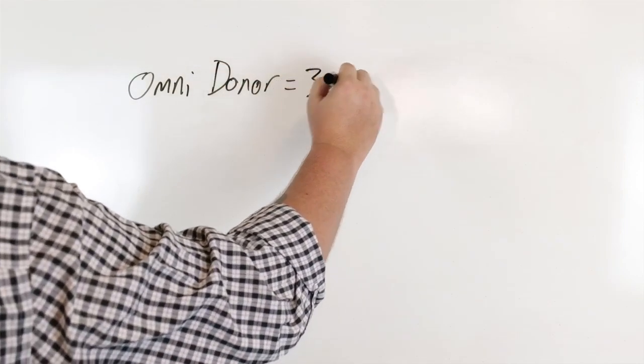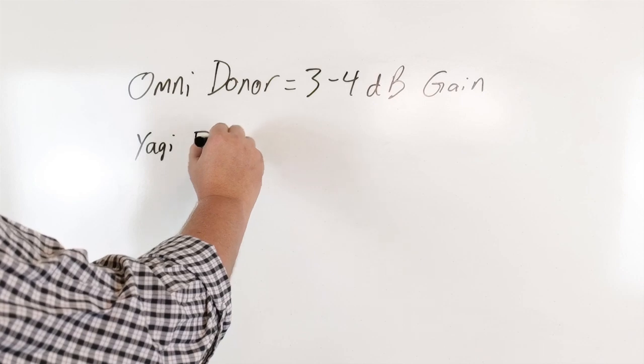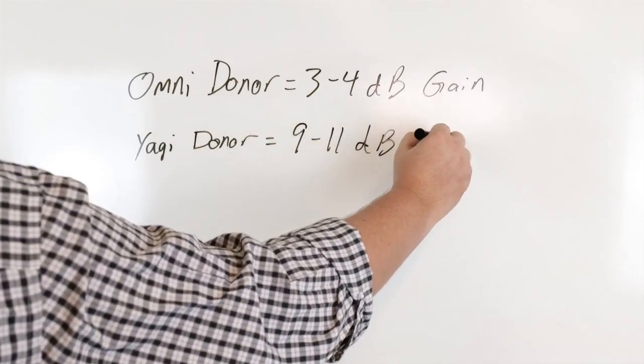In terms of gain, using an omnidirectional antenna outside will give you 3 to 4 dB of gain in all directions, while a Yagi antenna will give you 9 to 11 dB of gain in a specified direction.